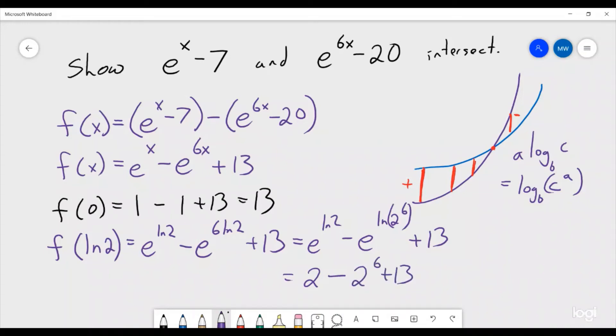Let's see, 2^6, that goes 2, 4, 8, 16, 32, 64. So this is 2 minus 64 plus 13, which is definitely less than 0.